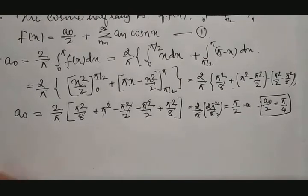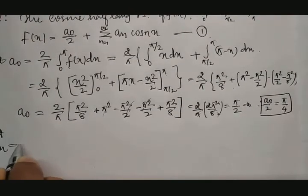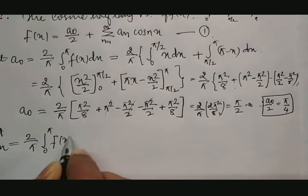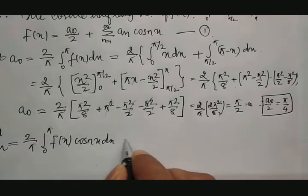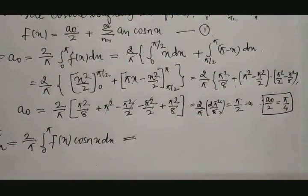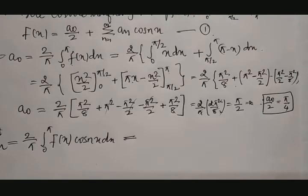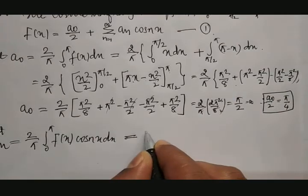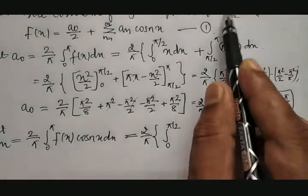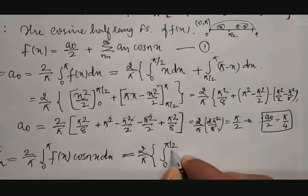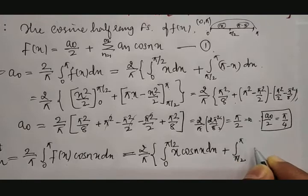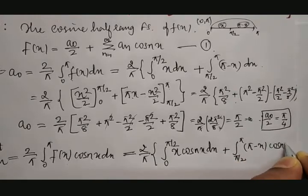Similarly, we calculate A_n using the formula: 2 by pi, integration between 0 to pi, f of x into cos nx dx. Since the interval is split into 0 to pi by 2 and pi by 2 to pi, it becomes: 2 divided by pi times integration from 0 to pi by 2 of x into cos nx dx, plus integration from pi by 2 to pi of (pi minus x) into cos nx dx.